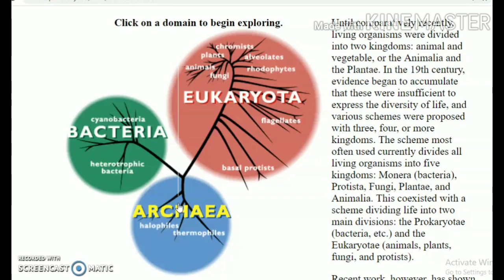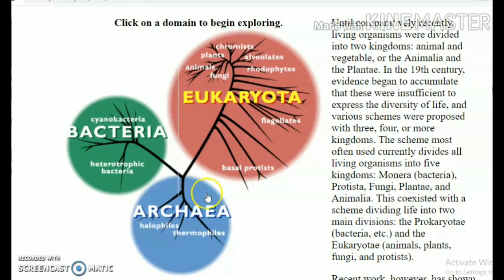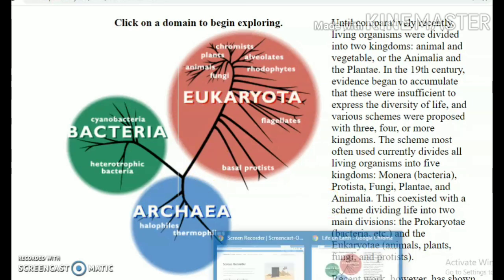Under Archaea there are no nuclear membranes. What Whittaker was doing was clubbing archaea and bacteria under one kingdom — kingdom Monera. But what Carl Woese did was split them, noting there is a lot of diversity among the Monerans. Under Eukaryota, the third domain, kingdom Protista, Fungi, Animalia, and Plantae were all clubbed. This became the six-kingdom classification under three domains — a more latest concept which is being followed.